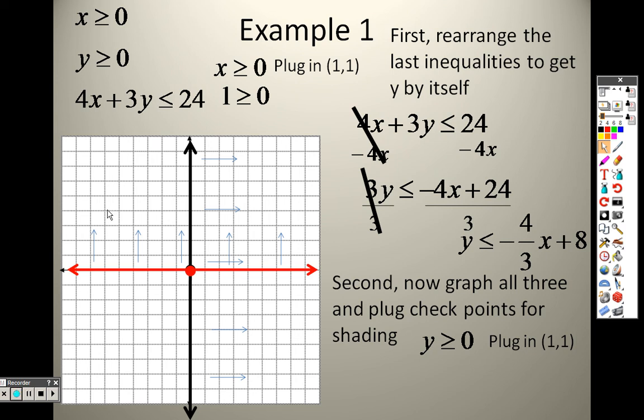So, now I've got to graph this line here. And, that is a positive 8. So, the slope is 1, 2, 3, 4, 5, 6, 7, 8. I put that there. And, I go down 1, 2, 3, 4, and over 3 and put a point. Then, I go down 4 and over 3 and put a point. Because, it's less than or equal to, I draw a solid line.